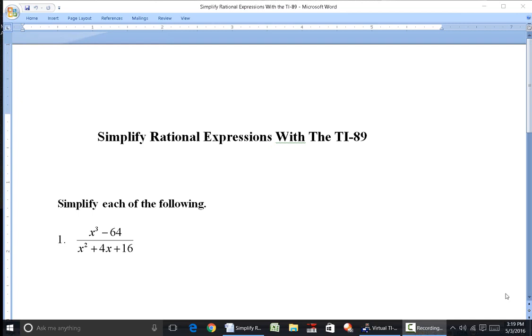The first one I have here is x to the third minus 64 over x squared plus 4x plus 16. So we're going to simplify this and normally what we do is we try to reduce it. One way we could do is we could factor the numerator, factor the denominator and try to see if we can cancel like terms.